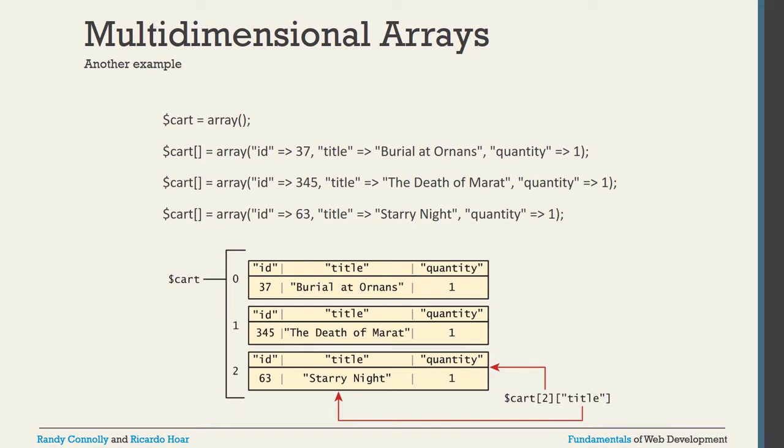You can also define multi-dimensional arrays with string keys for the horizontal dimension. For example, columns can be named 'id', 'title', and 'quantity' as horizontal keys, while vertical keys default to 0, 1, 2. So to display element [2]['title'], you get 'Steady Night' as output. In multi-dimensional arrays you don't always have to use integers — you can mix integer and string keys.